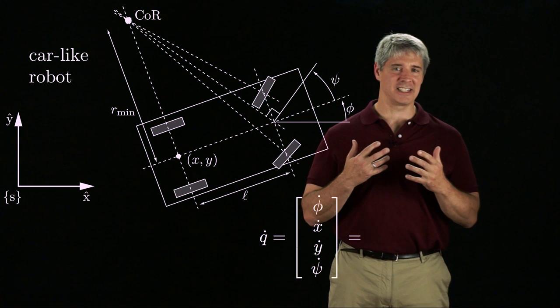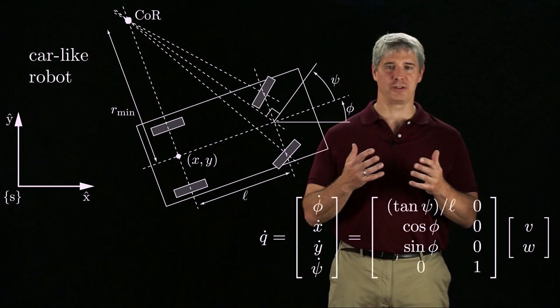then the kinematic model is this G of Q matrix times the controls, which are the forward velocity V and the rate of turning the steering wheel W.